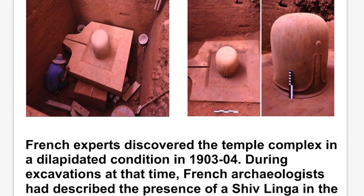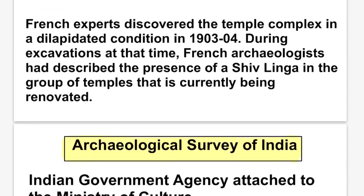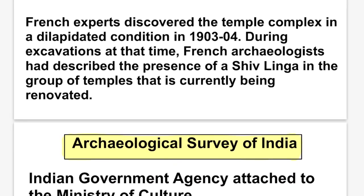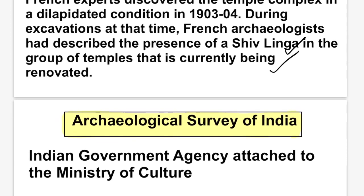This is the picture of the Shivalinga found by the Archaeological Survey of India. Importantly, a French expert already discovered this temple in a very dilapidated condition in 1903-04. During that excavation, high-end technologies were not available, so it was not completely excavated, though they mentioned there was a Shivalinga in the complex. So ASI has not newly discovered it — it was discovered in 1903-04, and ASI has newly examined the already discovered site.